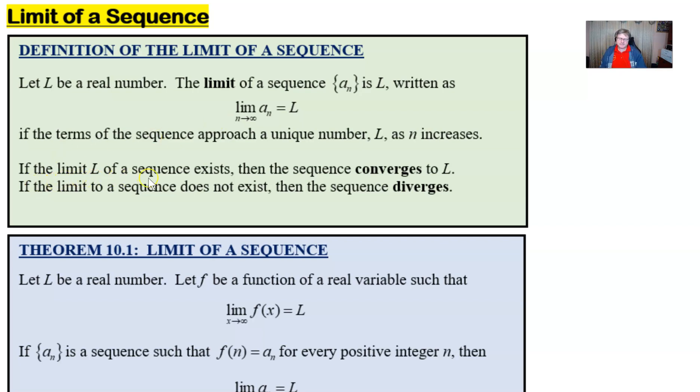If this limit L of a sequence does indeed exist, then we're going to start using some different language and we're going to say that this sequence will converge to L. If that limit does not exist, which predominantly means that you would get an infinity or negative infinity answer, then that sequence will diverge. Lots of language there that you've already used if you think back to improper integrals and the like.